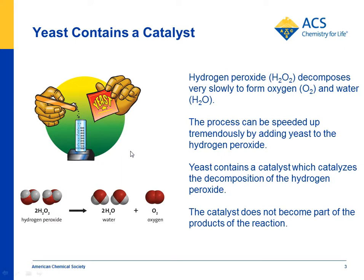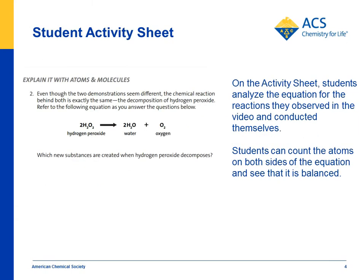In the classroom, you can use regular-strength hydrogen peroxide from a drugstore — 3%, compared to the 30% used in the video demonstrations. Kids put hydrogen peroxide in a graduated cylinder and add yeast, which contains a catalyst called catalase that decomposes the hydrogen peroxide. On the student activity sheet, students look at the equation, confirm it's balanced, and recognize the products — water and oxygen — based on what they saw in the videos: steam from Genie in a Bottle and bubbles from Elephant's Toothpaste.